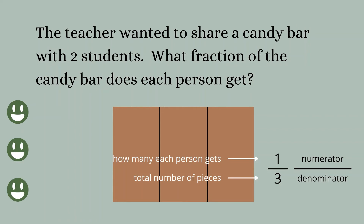When we're writing fractions, the number we put on top is called the numerator and the number we put on the bottom is called the denominator, and they come from very specific places. The numerator is telling us how much or how many each person is getting. And the denominator always tells us the total number of pieces. We chose one piece per person and three total pieces, because there were three people sharing.